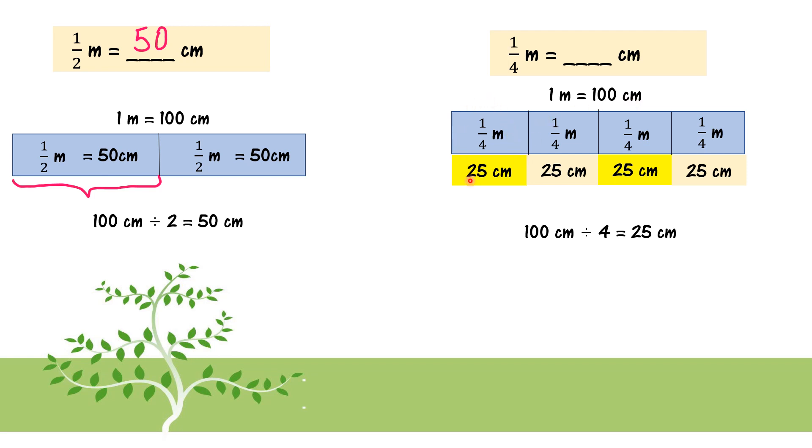So 1 over 4 is equal to 25 cm. How about 3 over 4 meter? 3 over 4 means 3 parts. Over 4, divide into 4, right? Now, 3 over 4, take 3 parts. 25 plus 25 plus 25. So it's 75 cm.